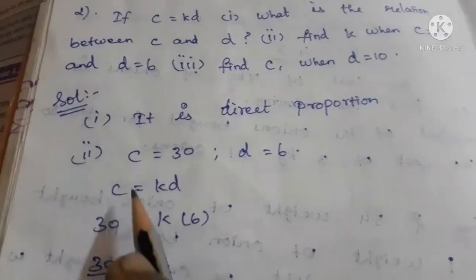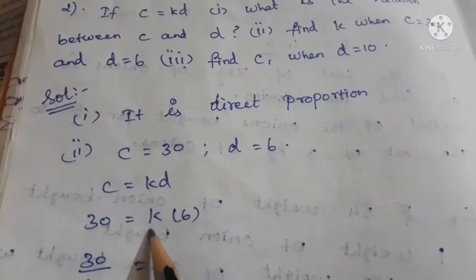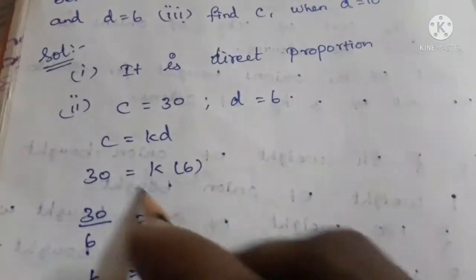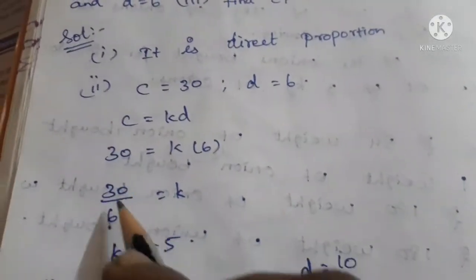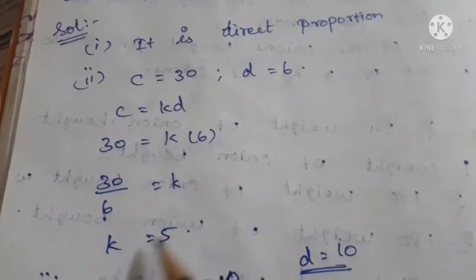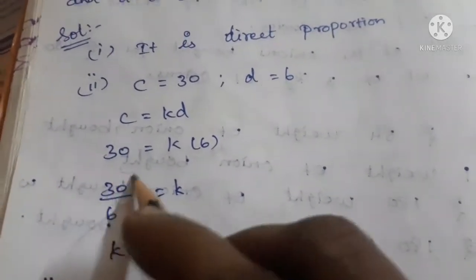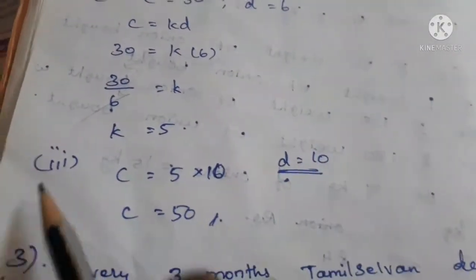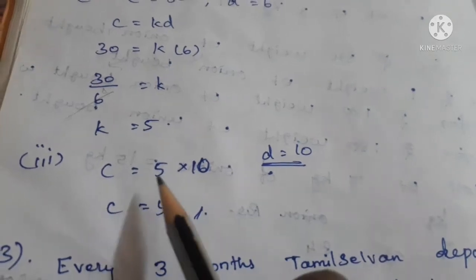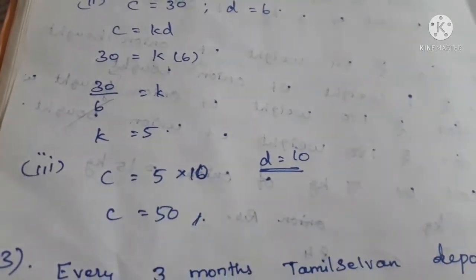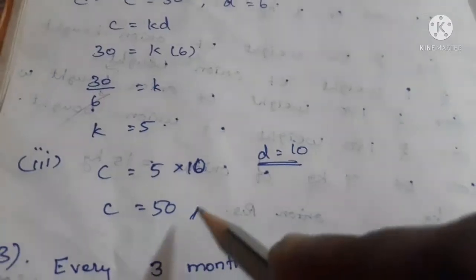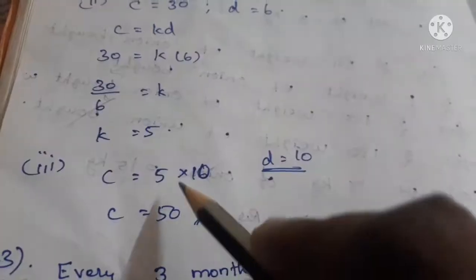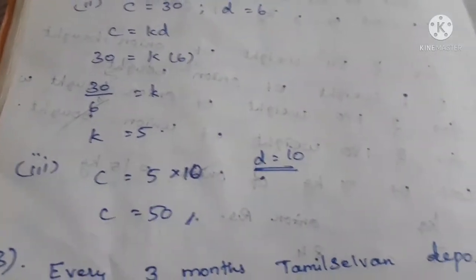Substituting c = 30 and d = 6 in the formula to find k. For the third part, when d = 10, substituting the k value: 5 tens are 50, so c = 50.